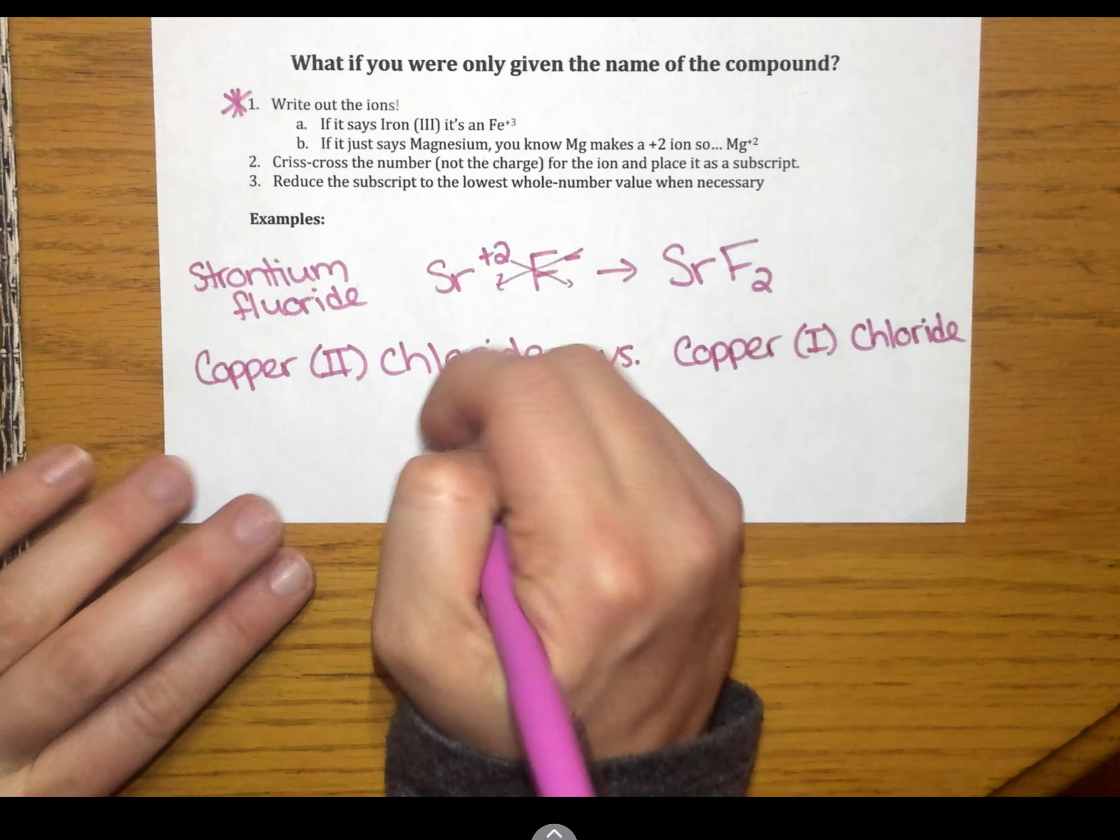Now, in compound 1, it says copper 2. That means I'm going to have Cu plus 2 as my cation. In my second compound, I have copper 1. That means it's going to be Cu plus 1.